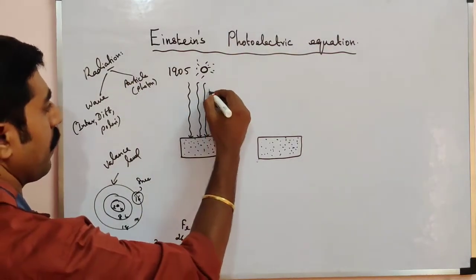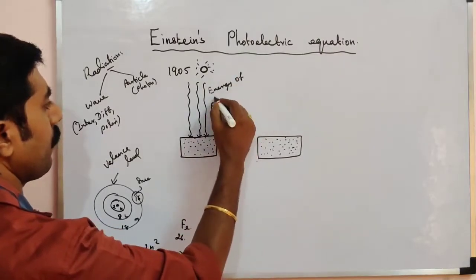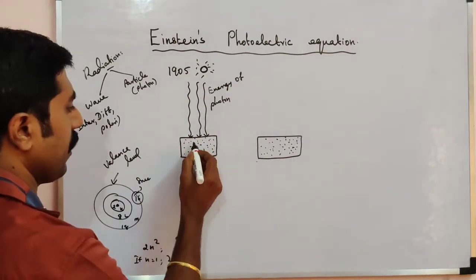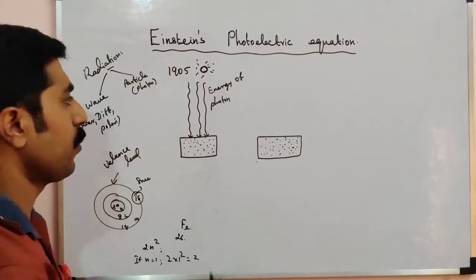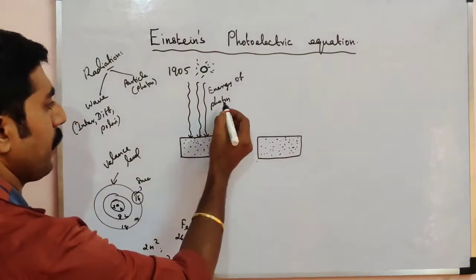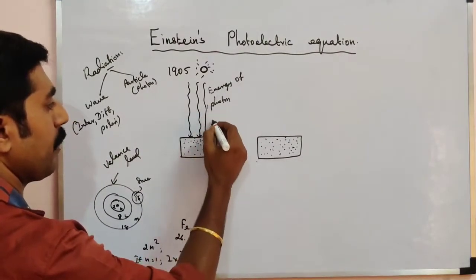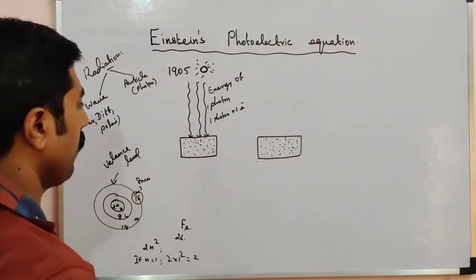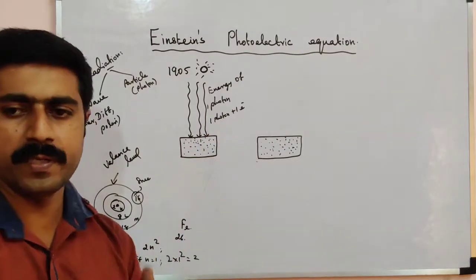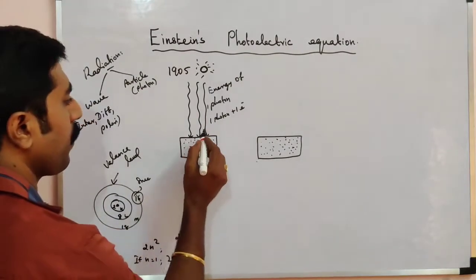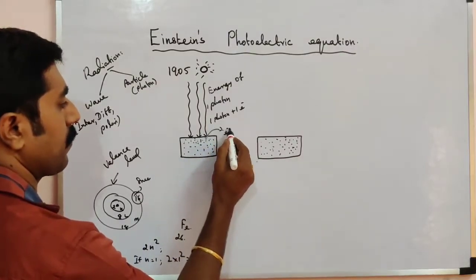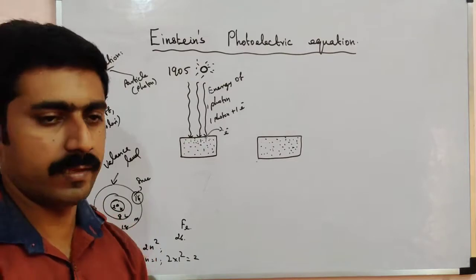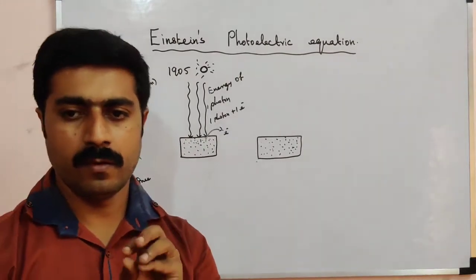The photon carries energy and strikes the metal surface. The free electrons absorb the photons — one photon interacts with one free electron. The energy of the photon is split into two parts: one part of the energy is used to liberate the electron from the metal surface, and the remaining part is imparted to the free electron as kinetic energy.